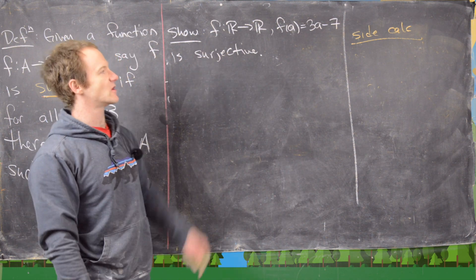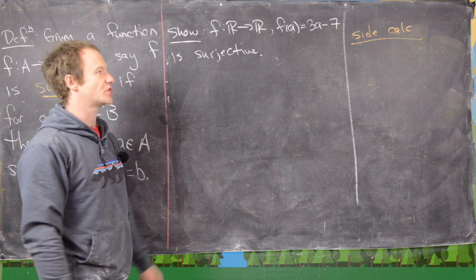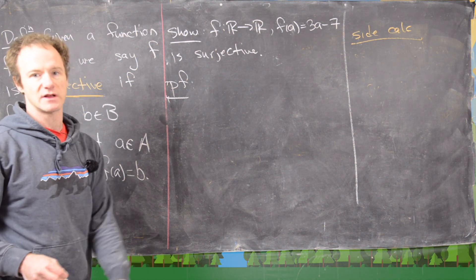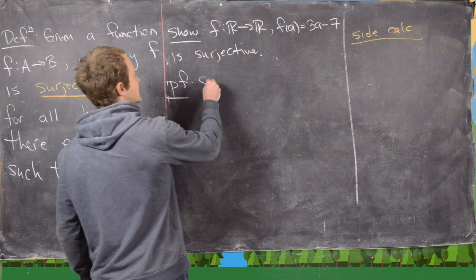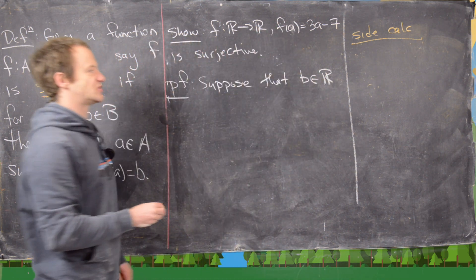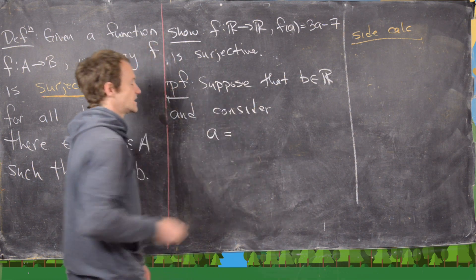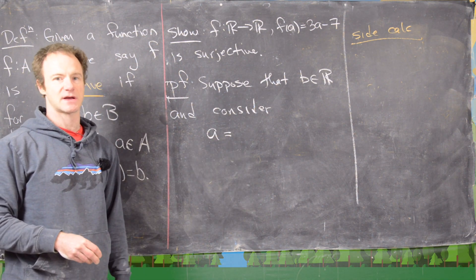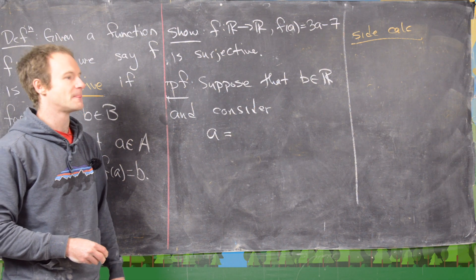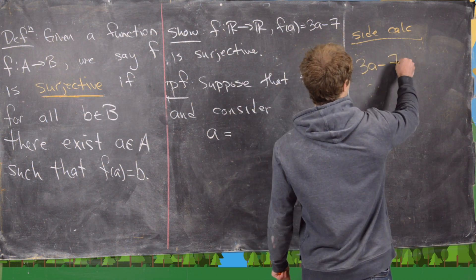For our first example, consider the function from ℝ to ℝ given by f(a) = 3a - 7 — that's just a line. We want to show it is surjective. Our proof starts the same way as the outline: suppose we have some element b from the codomain ℝ. We need to consider a equals something, but first we need to do our side calculation to find that value.